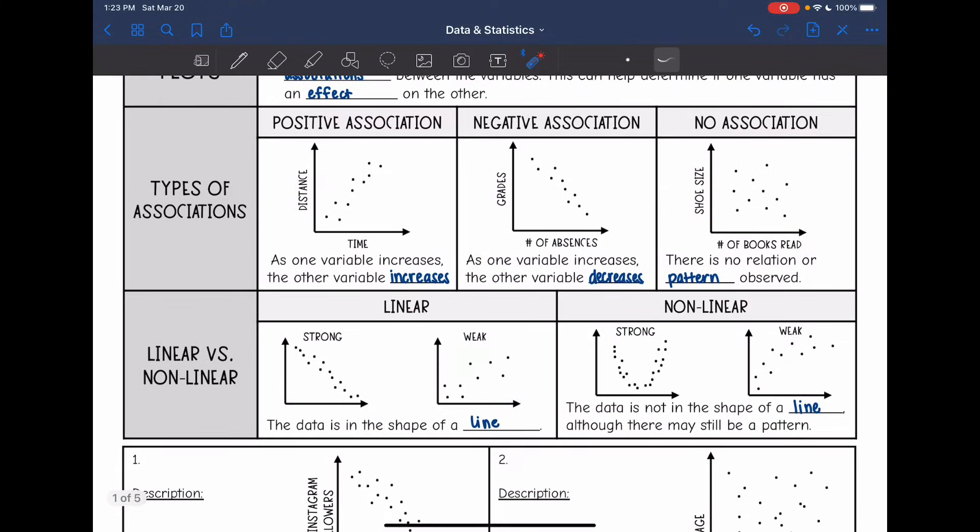Here are three different types of associations that we're going to look at. The first one is a positive association where our graph is generally going up. As one variable increases, the other increases. They are both going up at the same time.